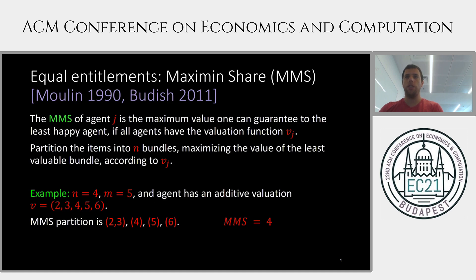Another well-studied share for the case of equal entitlements is the maxi-min share, or MMS. The MMS of an agent is the maximal value one can guarantee to the least happy agent if all agents have the same valuation vj — that is, the maximum over all partitions into n bundles of the value of the least valued bundle. For example, with 4 agents and 5 items of additive values 2, 3, 4, 5, and 6, the best partition maximizing the least-valued bundle puts the 2 and 3 together, showing the maxi-min is exactly 4.